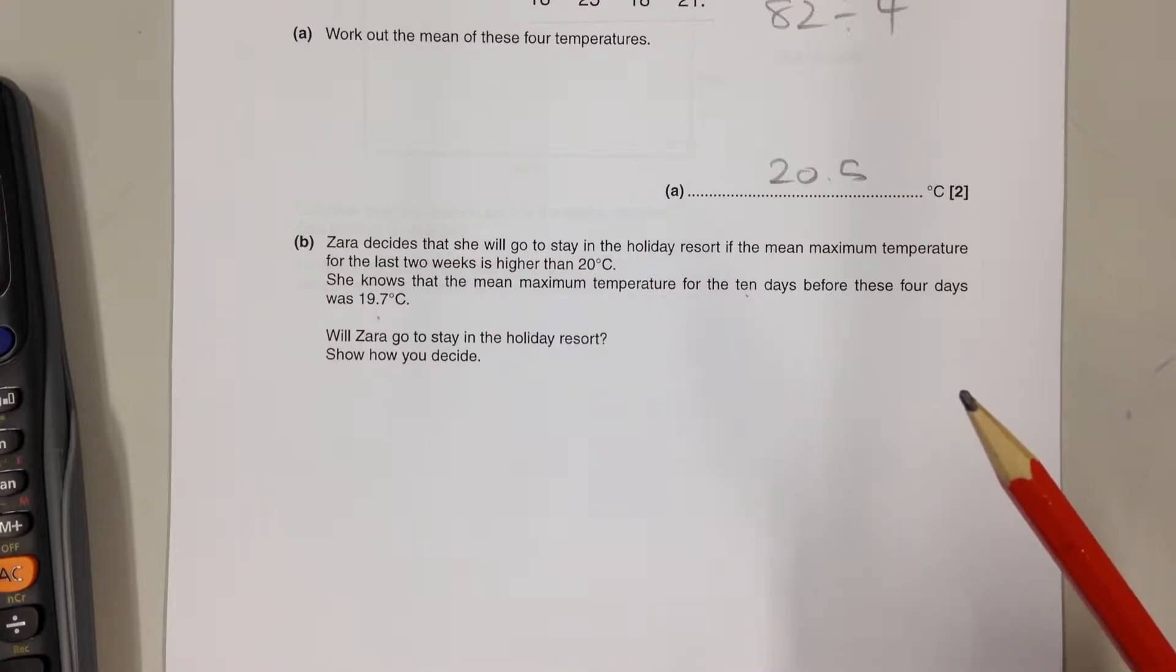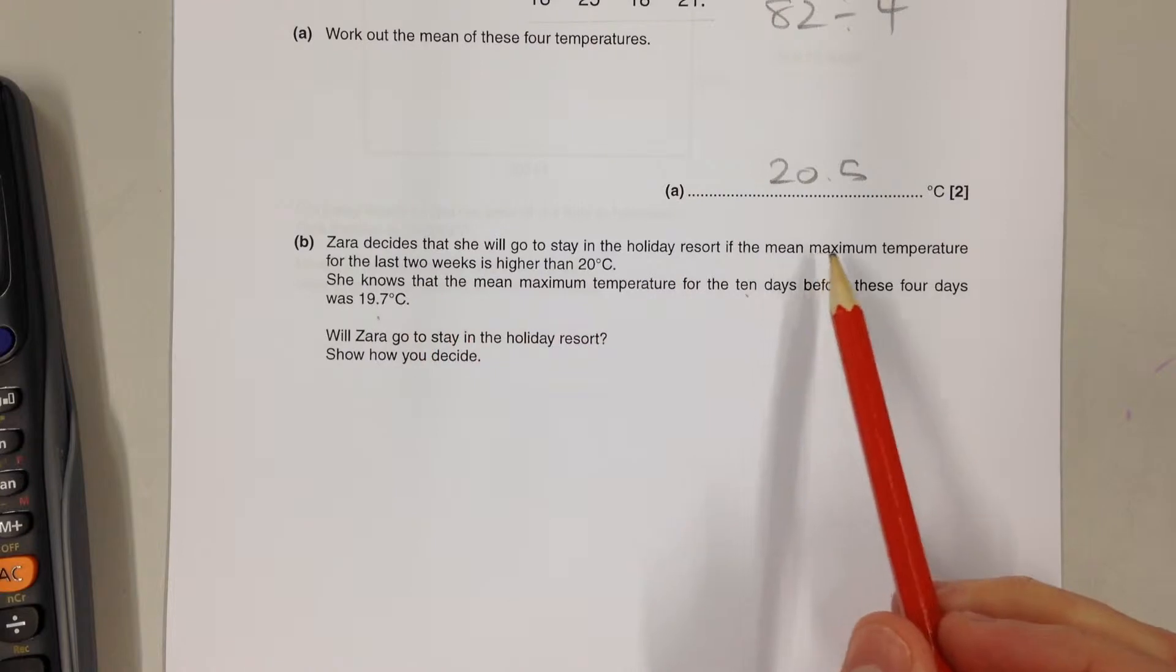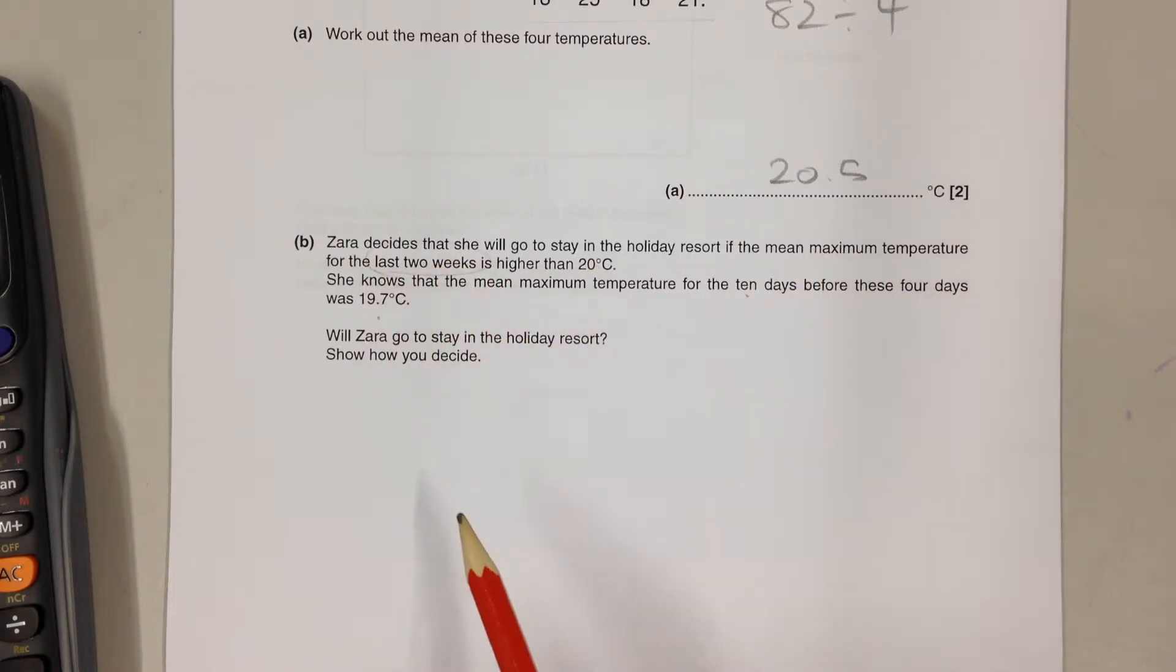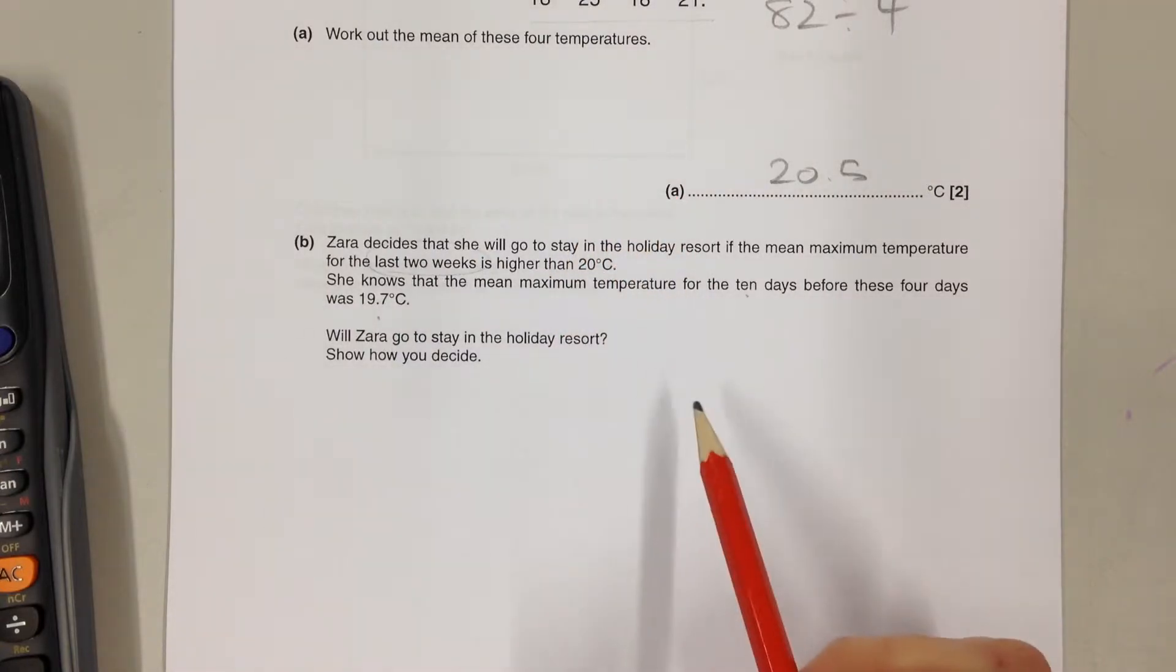We need to work out whether the mean maximum temperature for the last two weeks is higher than 20. We can't do that straight away because we don't know the 14 individual temperatures to add together and divide by 14.